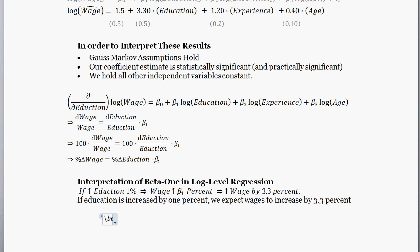So this beta 1 term here is the partial elasticity. A way to interpret it is, it's the percent change in wages given a percent change in education, holding everything else constant.